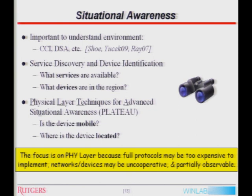But if that global control point doesn't exist, can we use physical layer information to come up with our own idea of who's in the region and what specific services and devices are around? We focus on physical layer information because it's available and because implementing full protocols for all of these systems may not be practical — it may be too expensive. Certain networks and devices may be operating in an undiscoverable mode or be partially observable. One of the issues with our cognitive platform is that we are constrained to about 4 MHz of usable bandwidth based upon the USB 2.0 interface.